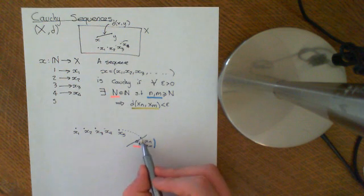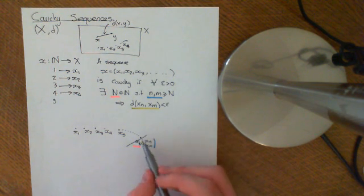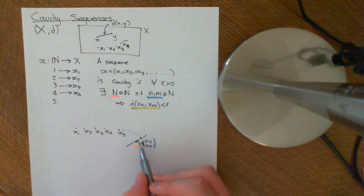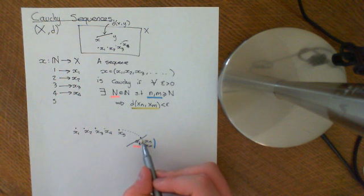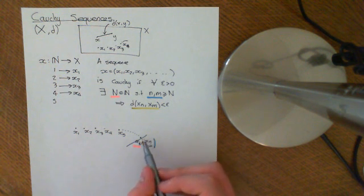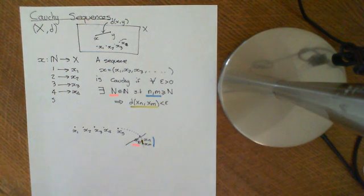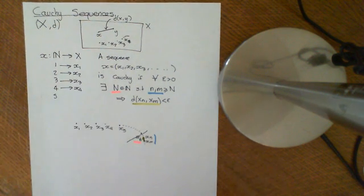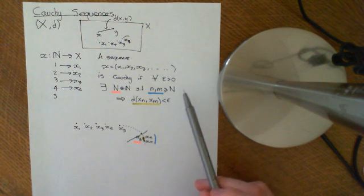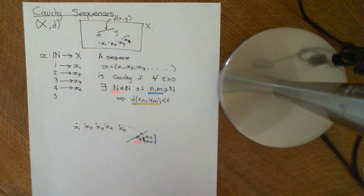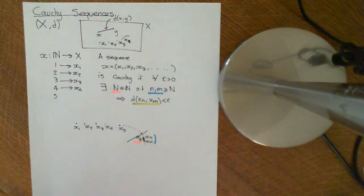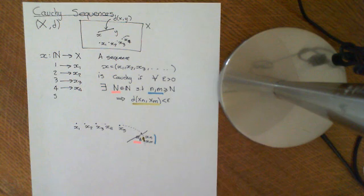Pick any two points beyond, or equal to, big N — you could take X_{N+1} and X_{N+2} — but any two points in the sequence beyond that point, and the distance between them has to be less than epsilon. That's the definition of a Cauchy sequence. In a very real sense, what it means is that if you go far enough along in the sequence, the distance between the terms gets arbitrarily small.